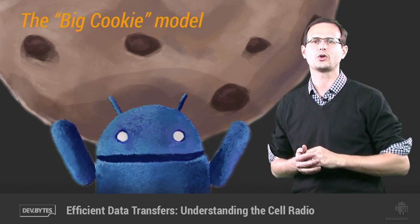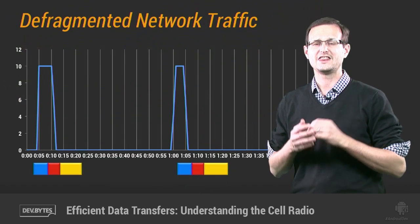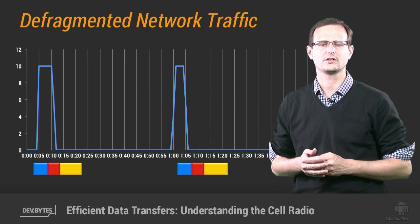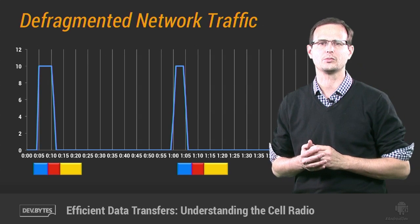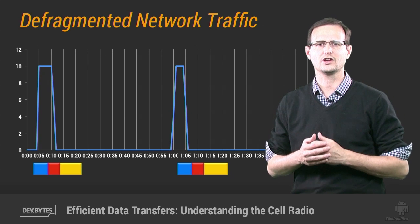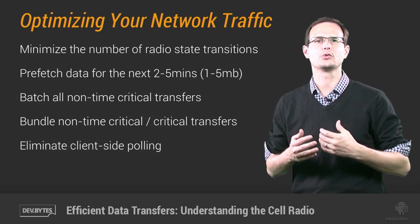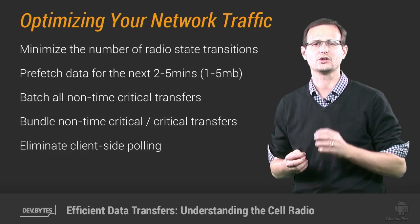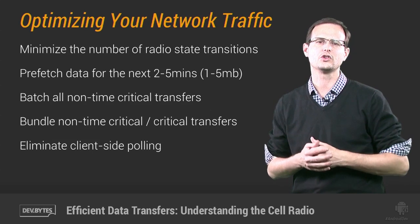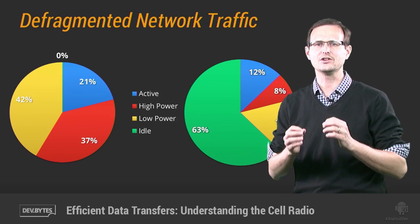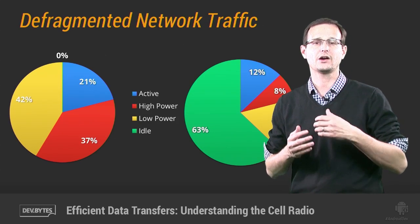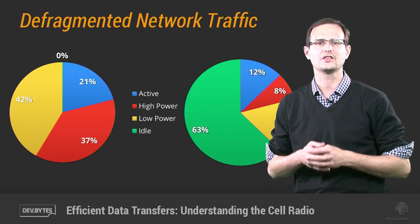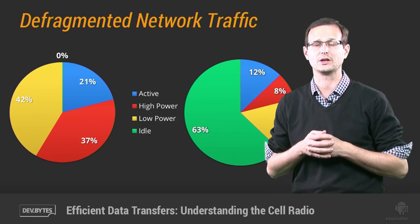That shows us that the big cookie model is a far better approach to coordinating our data transfers. In this example, I've bundled all of the repeating transfers together, and the intermittent transfers have been largely replaced with aggressive prefetching. Obviously, you usually can't entirely predict what data users might need, nor can you ignore client or server side changes that need to be synchronized. But you can aim to minimize the number of radio state transitions through a combination of aggressive prefetching, batching and queuing transfers that aren't time critical, and bundling these with user-initiated or server-initiated transfers. The result is a significant improvement: the radio is now idle nearly two-thirds of the time, and the active radio percentage has dropped significantly thanks to improved download efficiency from transmitting more data in each session.